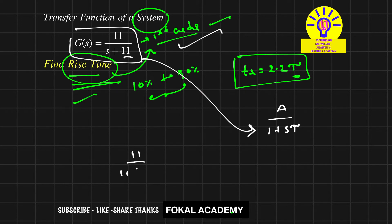So 11 cancels, and that equals 1 / (1 + (1/11)s). Now compare with the standard equation, and then we get the time constant τ = 1/11.